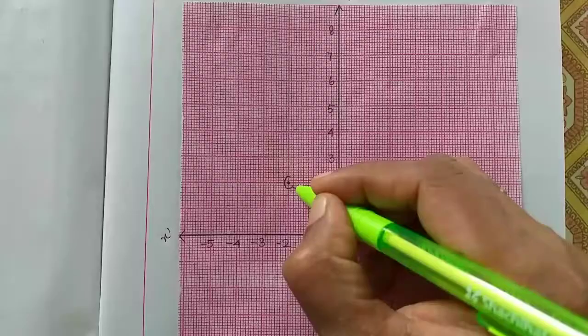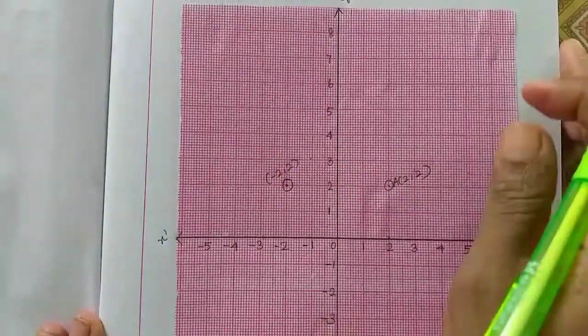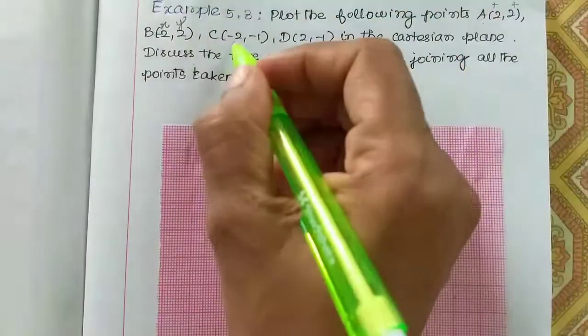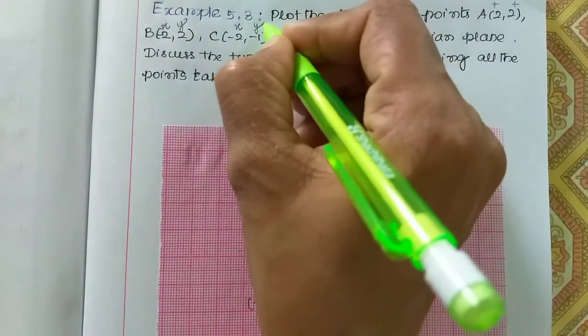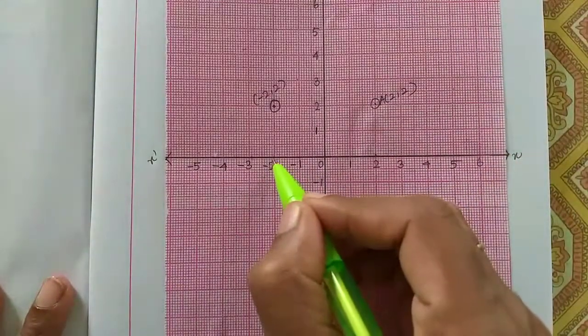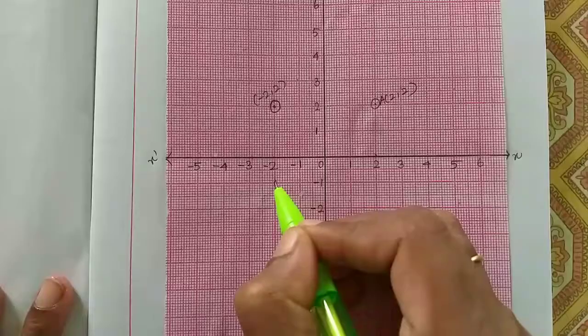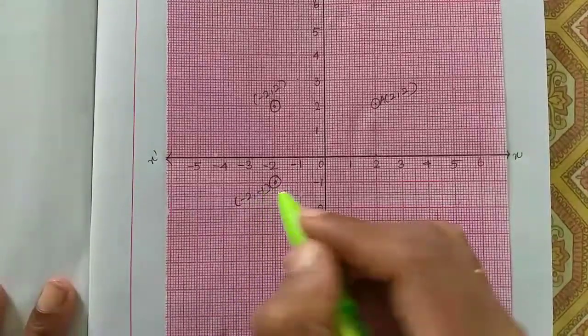Next C is minus 2, minus 1. X-axis is minus 2 and y-axis is minus 1. Y-axis is minus 1, so here it is minus 2, minus 1.